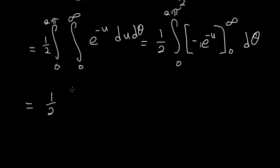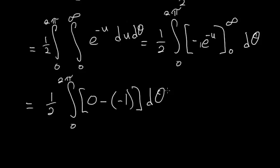So writing that down, we have that this is equal to 1 half, integral from 0 to 2 pi. And then minus negative 1 for the lower bound. And then d theta. So this all simplifies to 1 half, integral of 0 to 2 pi of d theta.